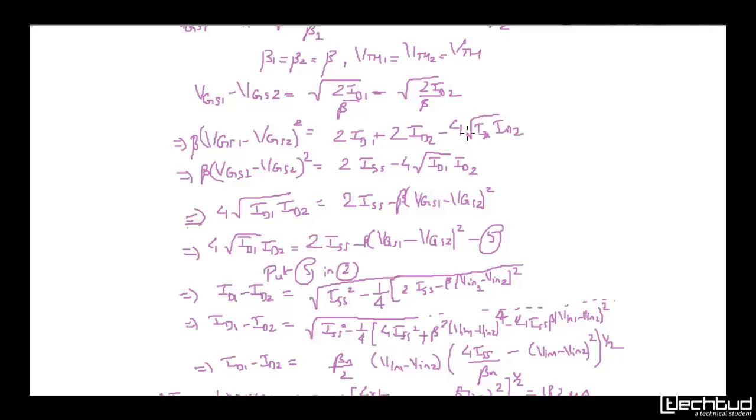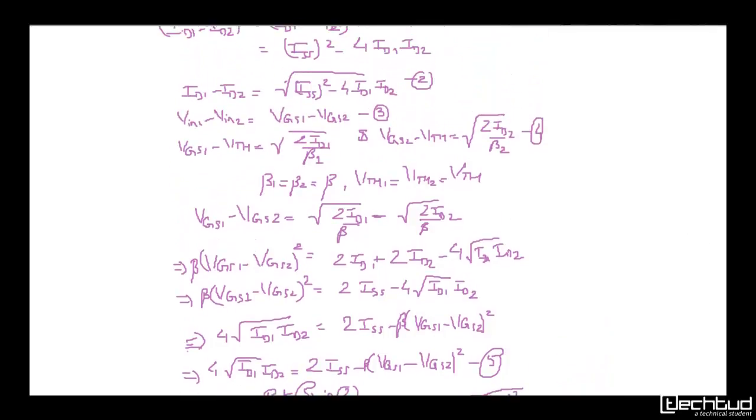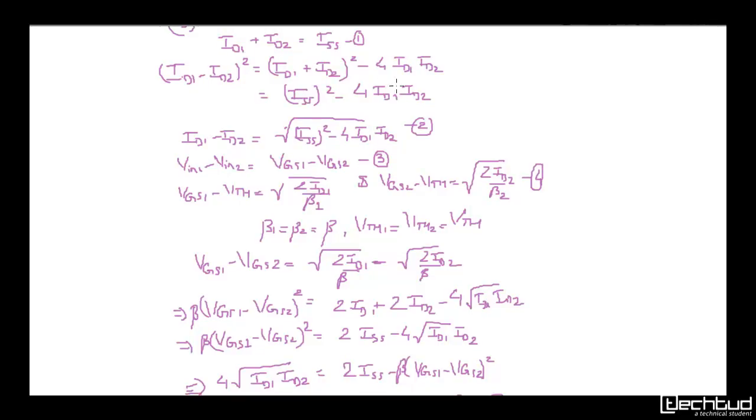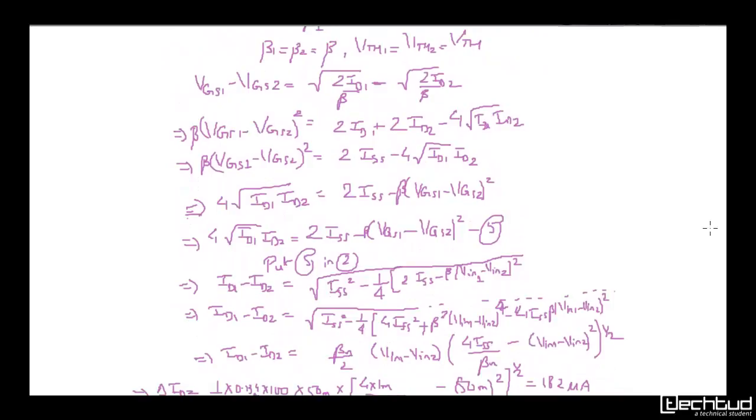When we square VGS1 - VGS2 we get 2*ISS/β - 4*sqrt(ID1*ID2)/β. Rearranging: 4*sqrt(ID1*ID2) = 2*ISS - β*(VGS1 - VGS2)². Substituting this into the ID1 - ID2 equation and solving, we get ID1 - ID2 = sqrt(ISS² - (1/4)*(2*ISS - β*ΔVin²)²).